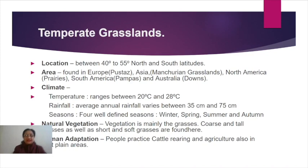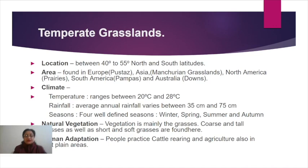Regarding the climate, temperature ranges from about 20 to 28 degrees centigrade. However, in the interior parts of the northern hemisphere, winter temperatures go very low because there is no influence of the sea or oceans. This results in a continental type of climate in the interior parts of these continents.